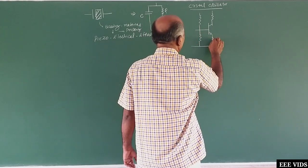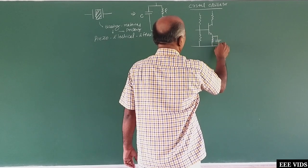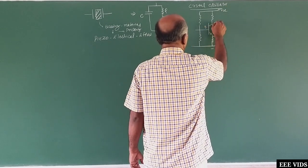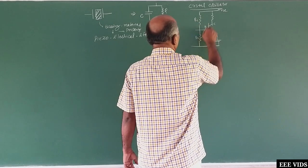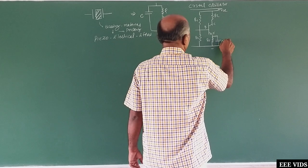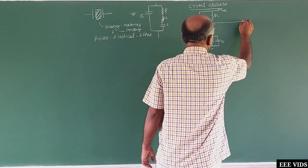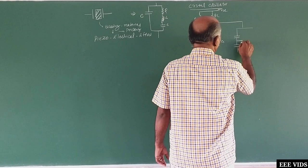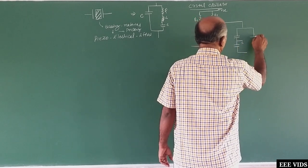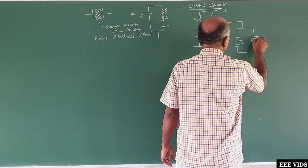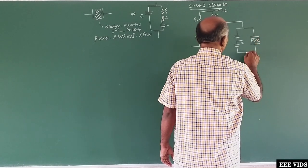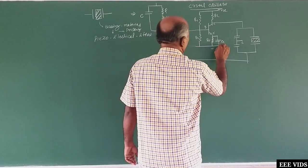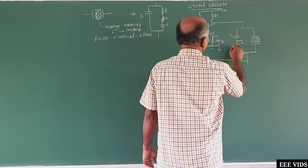The configuration uses a common emitter amplifier. Two capacitors are connected to a common ground point, similar to a Colpitts oscillator. In place of the inductance, the crystal is used. This is the crystal connected between the circuit nodes, and C1 and C2 are the two capacitors connected to the ground point.